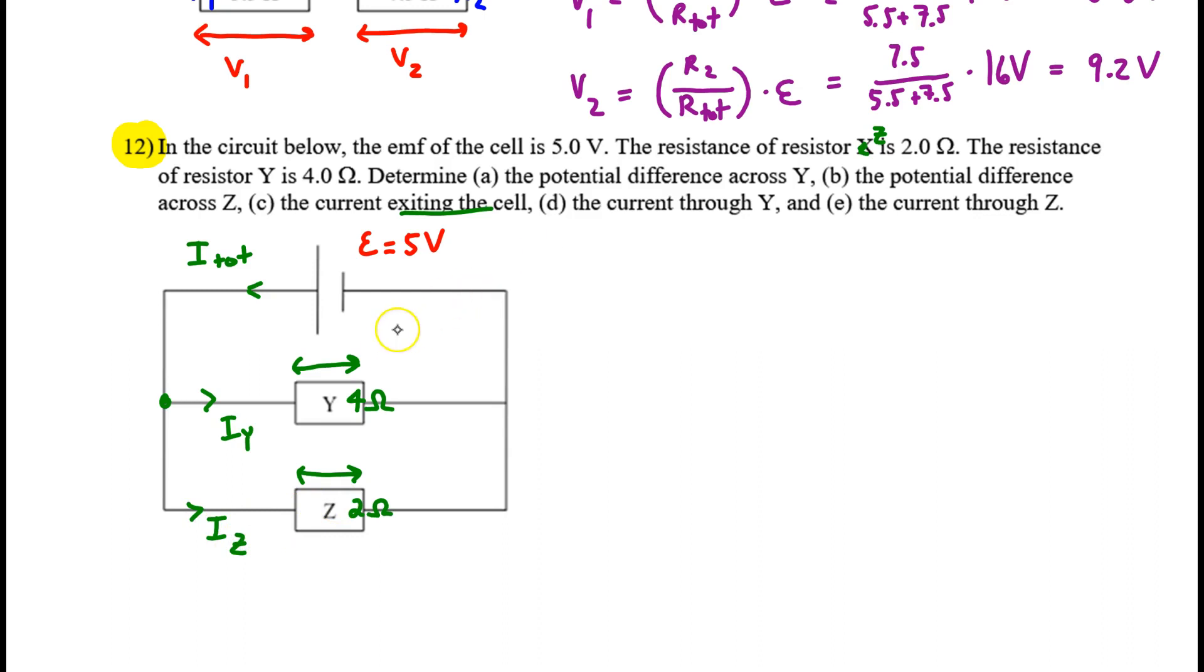First, the potential difference. That's pretty straightforward, because these resistors are in parallel with the cell. So we know the answer is going to be 5 volts, right? Same for Z. But for the sake of thoroughness, let's draw a closed loop through that top resistor. On that loop, we gain 5 volts of EMF. So we have to lose exactly the same amount for energy to be conserved. Where are we losing the 5 volts? Across resistor Y. And so that's how we know that VY is 5 volts.